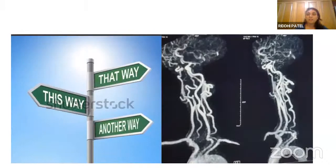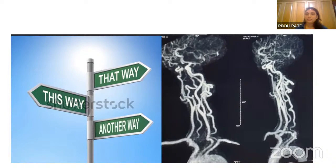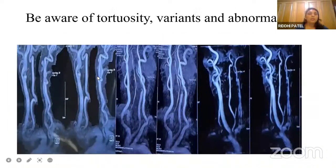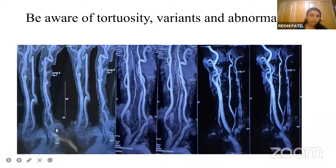Before starting aortic arch cannulation as well as major vessel cannulation, if we know the basic things via CT angiography or MR angiography, then it is easier to cannulate the vessels. If good quality MR angio is available, we can see the innominate artery, the left CCA, and the left subclavian artery - and it can look like a type 1 arch, so when we are cannulating we know where we are going. We need to know about the tortuosity variants and abnormalities beforehand. Here we can see a very tortuous type of aortic arch with very tortuous vessels.